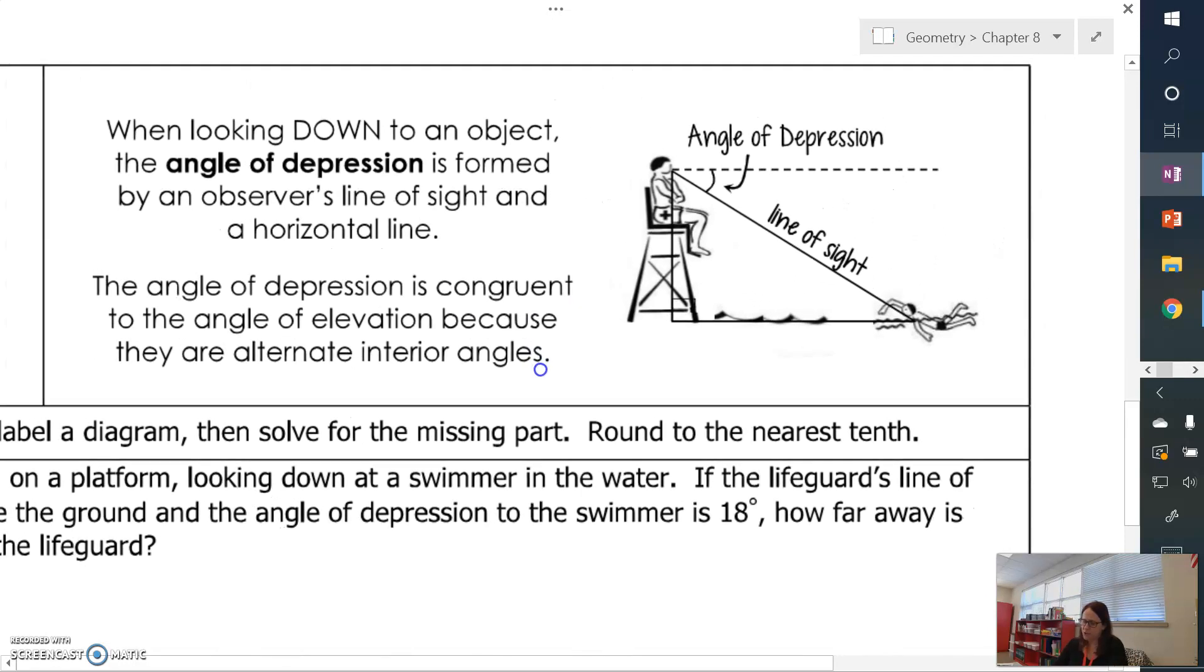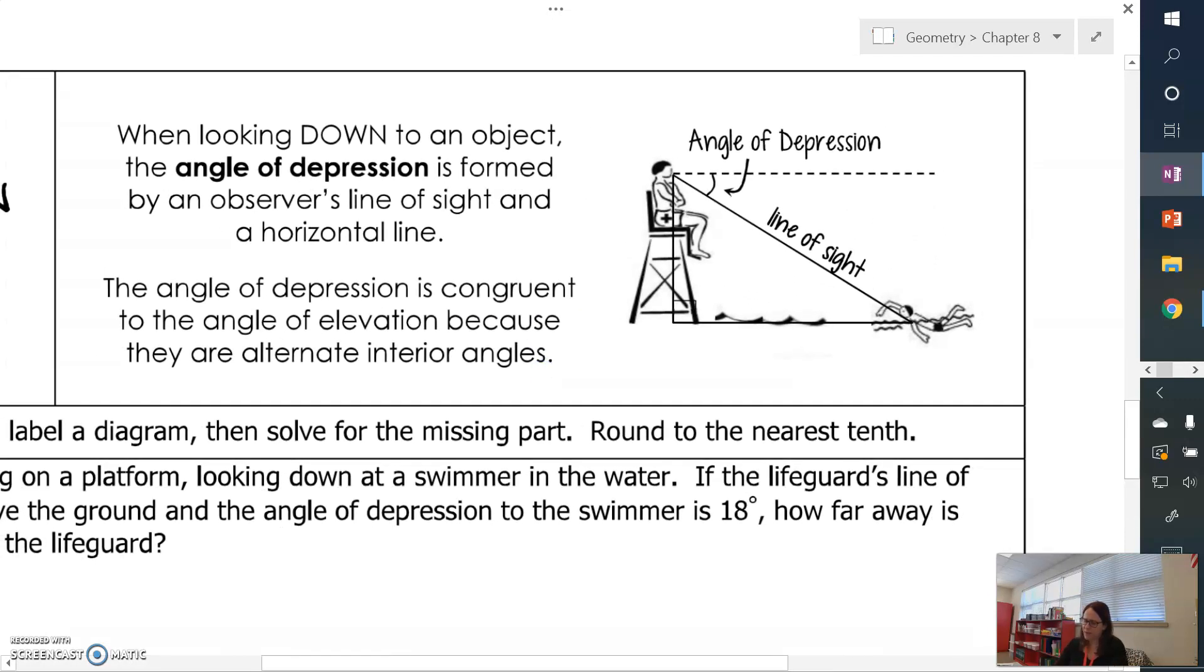So take a look at this picture here. You have a lifeguard, and he's sitting on one of those lifeguard towers. And they're watching the swimmer. So the lifeguard is looking down. And this dashed line here is his eyesight or eye line. So if he was looking straight forward, that's where he would look. But he has to look down to see the swimmer. And so that angle between this horizontal dashed line and the line of sight, that's your angle of depression.